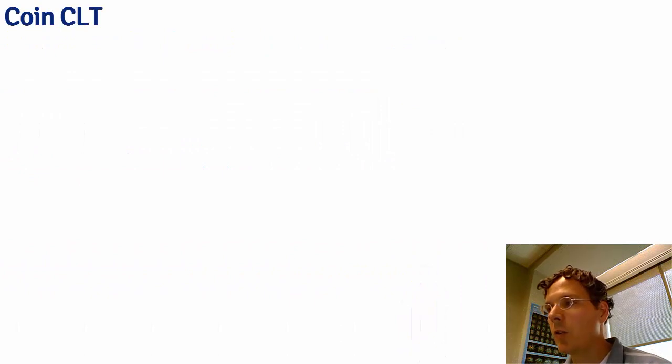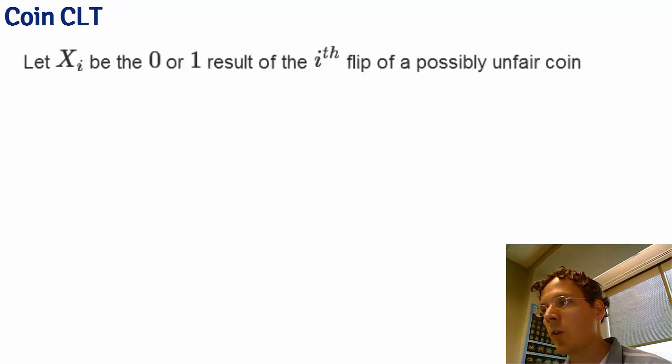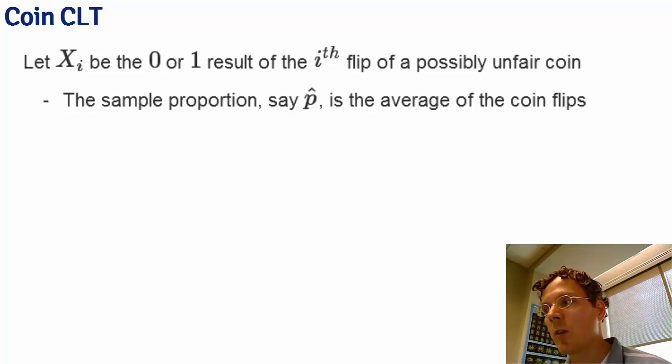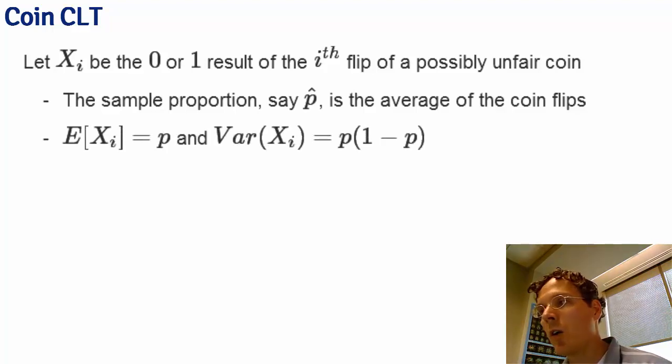Flipping a coin is an interesting case because it goes back to the original development of the central limit theorem as an approximation for the distribution of sample proportions. So let's let Xi be the 0-1 result of the i-flip of a possibly unfair coin. Then recall we usually give the notation p-hat as the sample proportion, which is simply the mean or the empirical average of the coin flips coding 0 as a tail and 1 as a head. Recall that the expected value of Xi is p, and that the variance of Xi is p times 1-p.